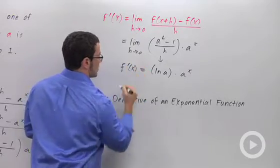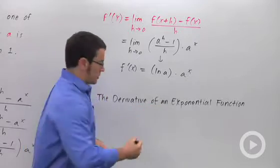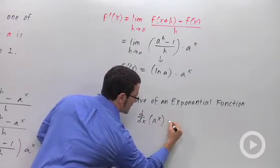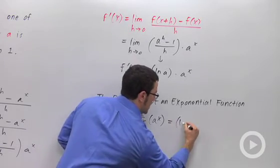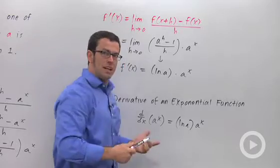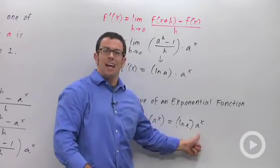f prime of x equals ln a. And so we summarize this by saying that the derivative of an exponential function, the derivative with respect to x of a to the x equals natural log of a times a to the x. So it's kind of interesting. Every exponential function's derivative is just a constant times that function.